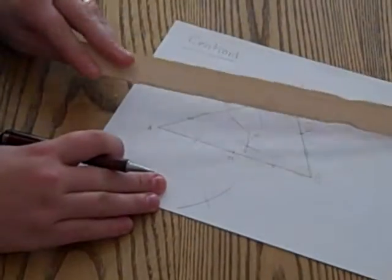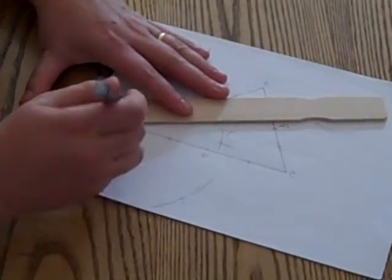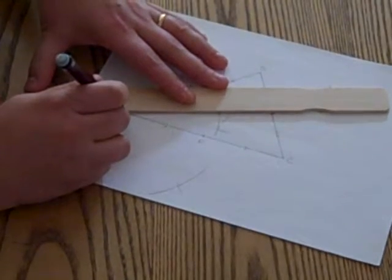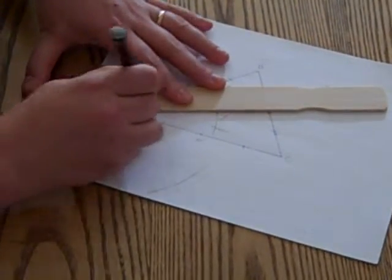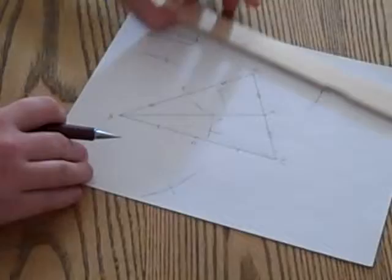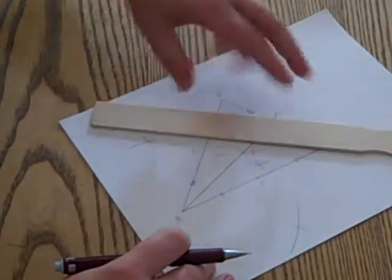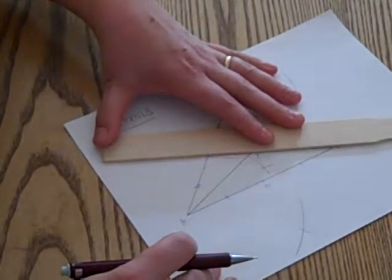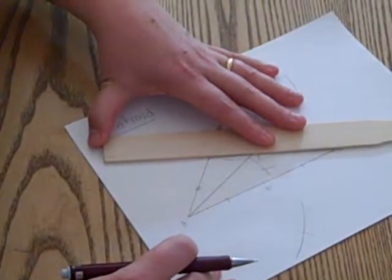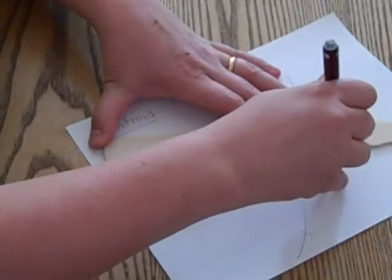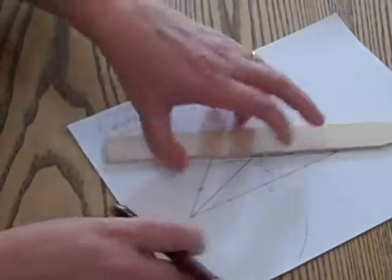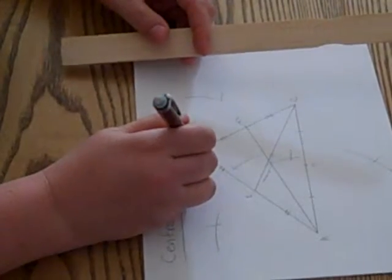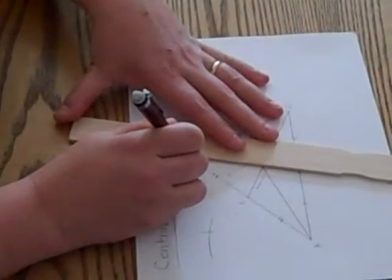Now I need to construct the three medians. Since I already have the midpoints, I just need to go from vertex A to the opposite midpoint, that would be point F. From vertex C to the opposite midpoint, that would be point E. And the last one from vertex B to point D.